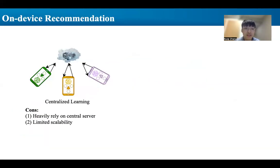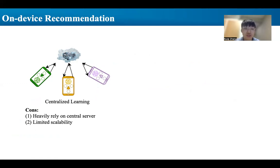Therefore, on-device recommendations have gathered attention while approaching centralized learning as implemented in federated recommendation. Users are trained locally based on their private data and then send the knowledge to the cloud server. The cloud server aggregates all received models and redistributes them to the user's device side. However, centralized servers are heavily relied upon throughout the training process and have limitations on scalability, since every user has to communicate with the central server.